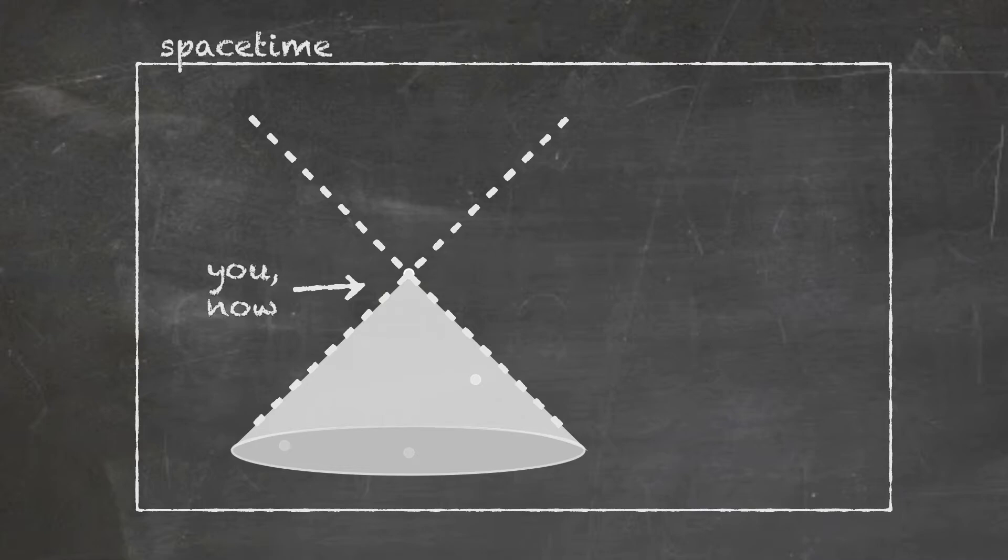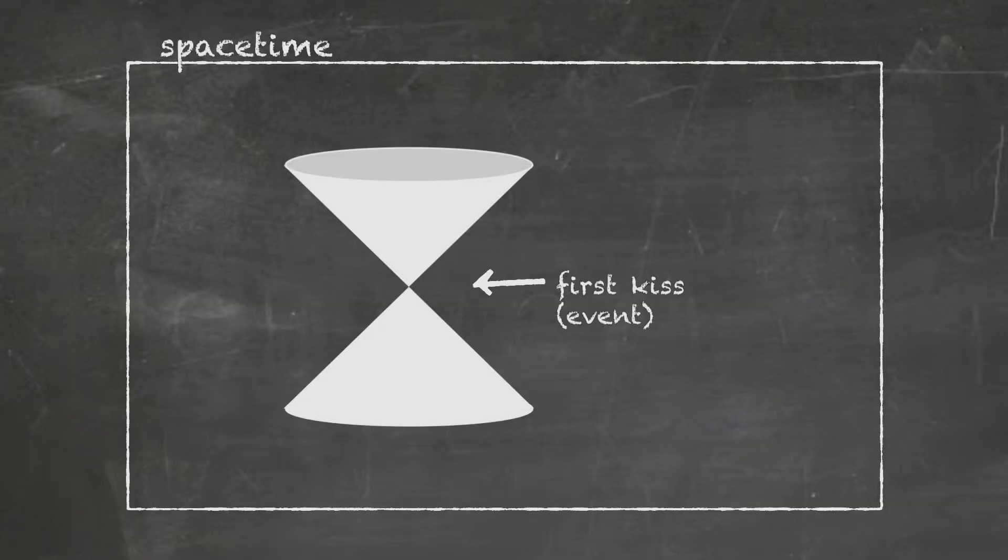That means the only events that you could have come from are in your past light cone. So when you start with an event and you draw the light cone around that event, the events in the future light cone are events that you could possibly arrive at. And the events in your past light cone are those that you could possibly have come from.